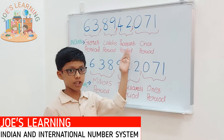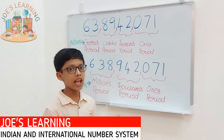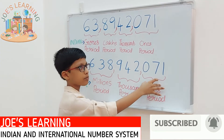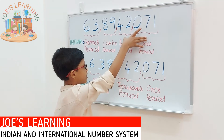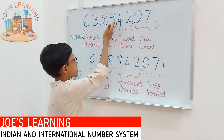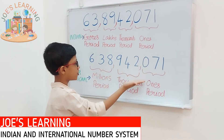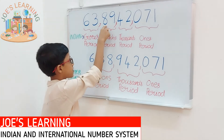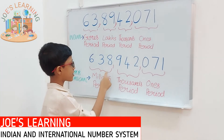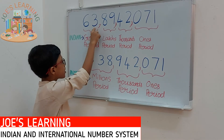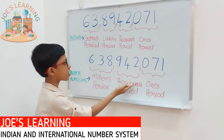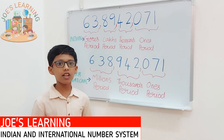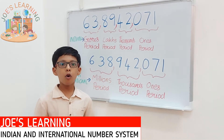Now let's look at the similarities and differences. In both systems, the ones period is the same, and the first five digits share the same place values. However, the digit 9 is in the lakh place in the Indian system but in the hundred-thousands place in the international system. The digit 8 is in the ten-lakhs place in Indian but in the millions place internationally. The digit 3 is in the crores place in Indian but in the ten-millions place internationally.